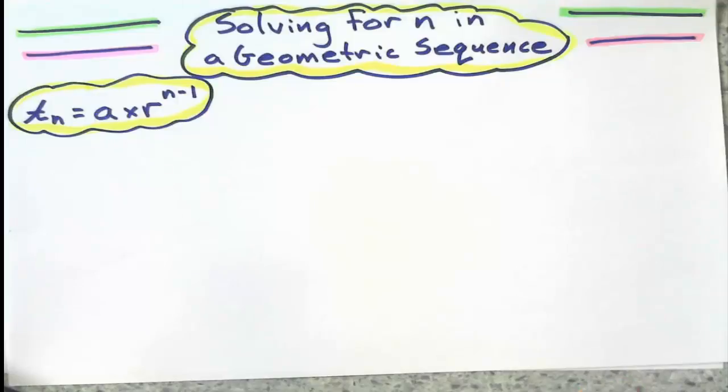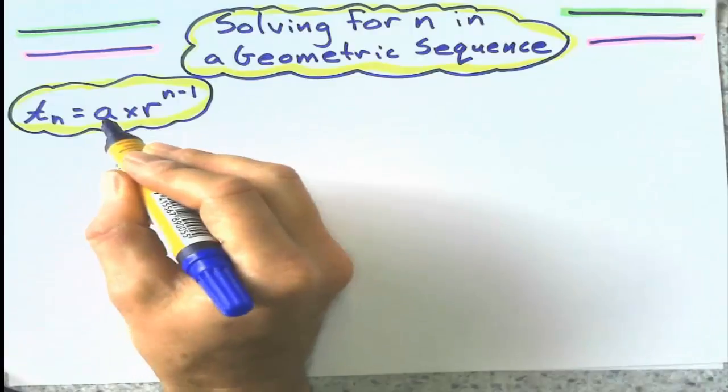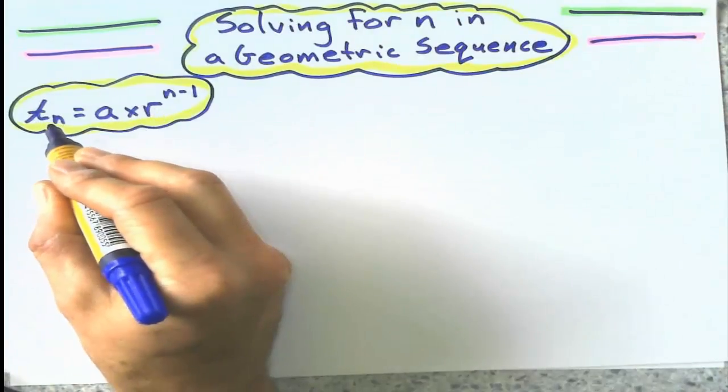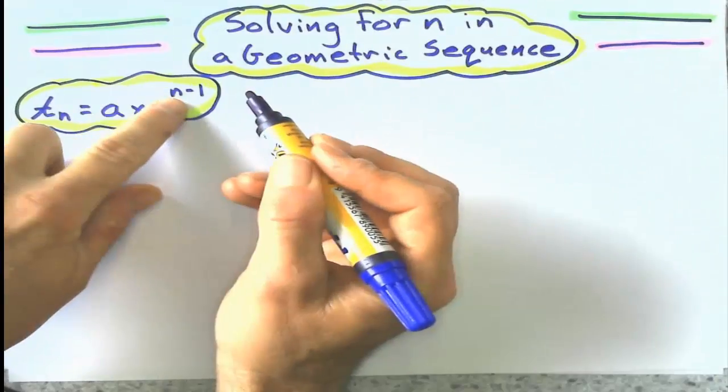In this one, what we're going to do is we're going to be given information, and we're going to be given the first term, the common ratio, one of the general terms, and we want to figure out what n is.